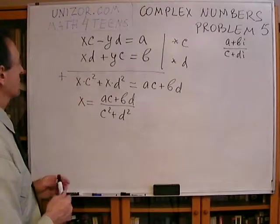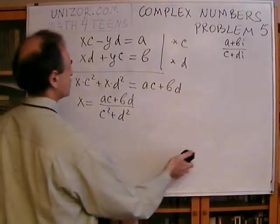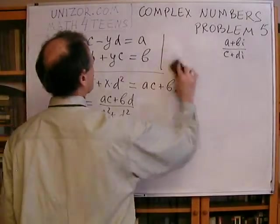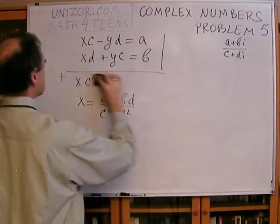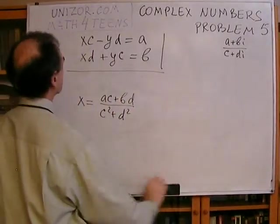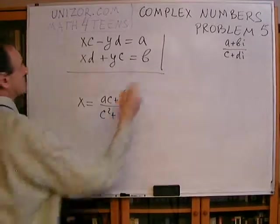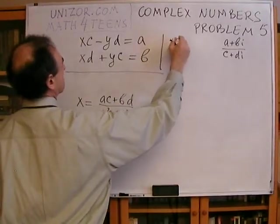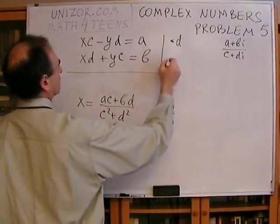So, having done that, let's just change it slightly and get rid of X from the same two equations. How can we get rid of X? Well, the same way, actually. We multiply this by D and multiply this by C.